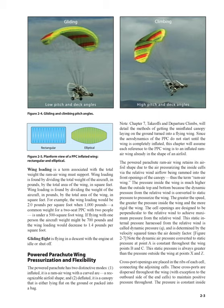The powered parachute has two distinctive modes: inflated, where it is a Ram air wing with a curved arc and a recognizable airfoil shape, and deflated, where it is a canopy lying flat on the ground or packed into a bag. Since the aerodynamics of the PPC do not start until the wing is completely inflated, this chapter will assume each reference to the PPC wing as an inflated Ram air wing already in the shape of an airfoil. The powered parachute Ram air wing retains its airfoil shape due to air pressurizing the inside cells via the relative wind airflow being rammed into the front openings of the canopy — thus the term Ram air wing. The pressure inside the wing is much higher than outside because the dynamic pressure from the relative wind is converted to static pressure to pressurize the wing.